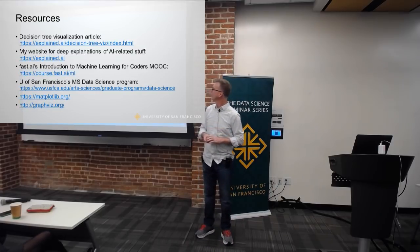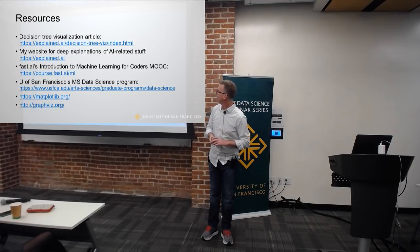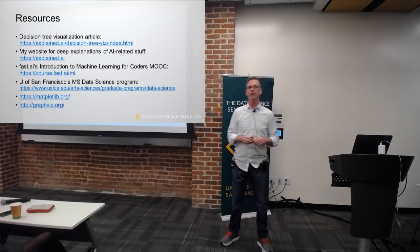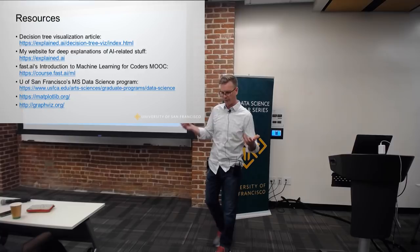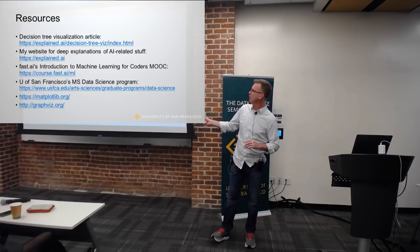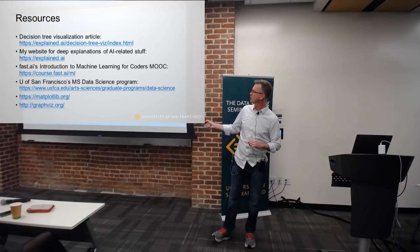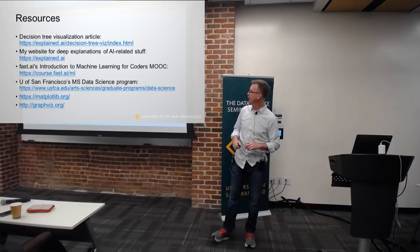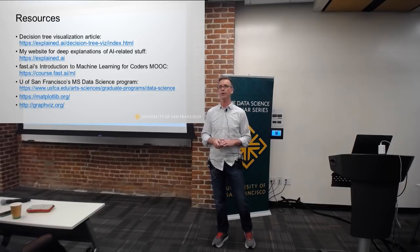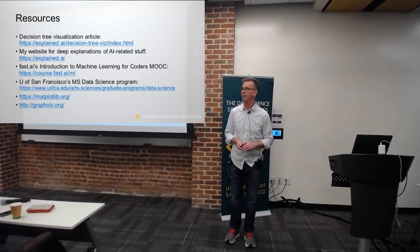I'll leave you with some links that may be useful to you. The first is an article on the talk you just saw. Generally I've got a website where I'm trying to put stuff up. If you'd like to learn more about decision trees and see an actual implementation, you can look at Jeremy's fast.ai course. And if you're interested in our graduate program, there you are. These are links to the two libraries I used primarily for this. With that, I will take your questions.